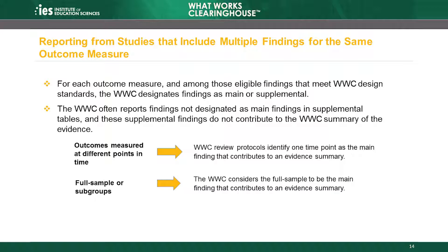The WWC applies a more general rule to studies that report both a full sample finding and findings for one or more subgroups within the full sample. Subgroups might be defined by location, cohort, or student characteristics like gender or race and ethnicity. In this case, the WWC considers the full sample finding to be the main finding, and the subgroup findings are reported in supplemental tables.